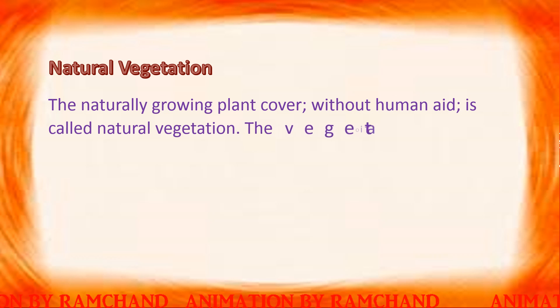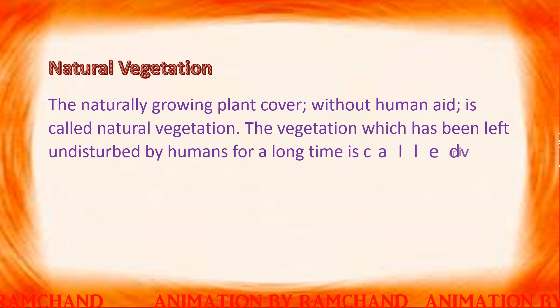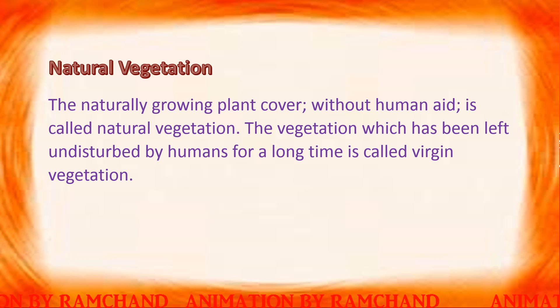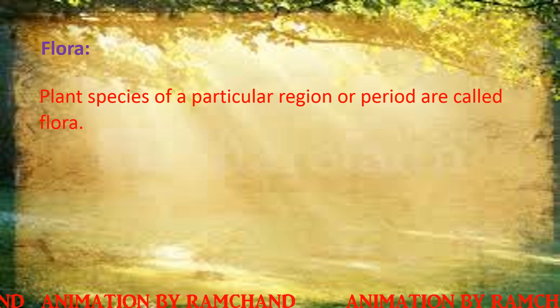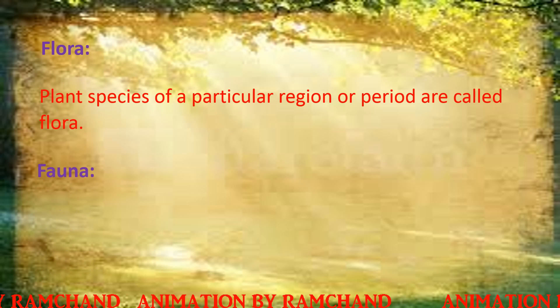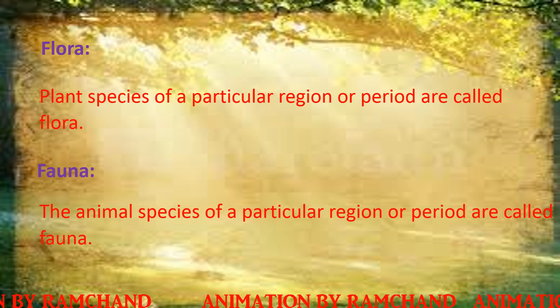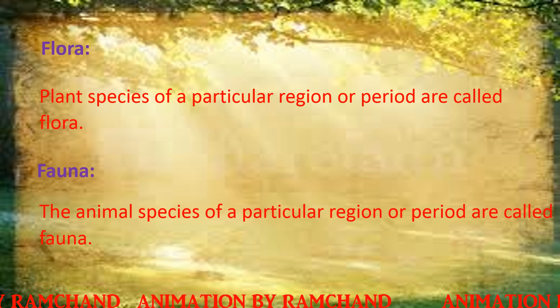Natural vegetation refers to the naturally growing plant cover without human aid. Vegetation left undisturbed by humans for a long time is called virgin vegetation. Plant species of a particular region or period are called flora, while animal species of a particular region or period are called fauna.